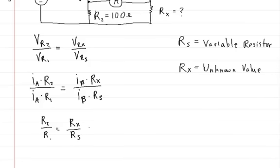And since we're solving for Rx, we're just going to rewrite that equation. We're going to say Rx is equal to RS multiplied by R2 divided by R1.